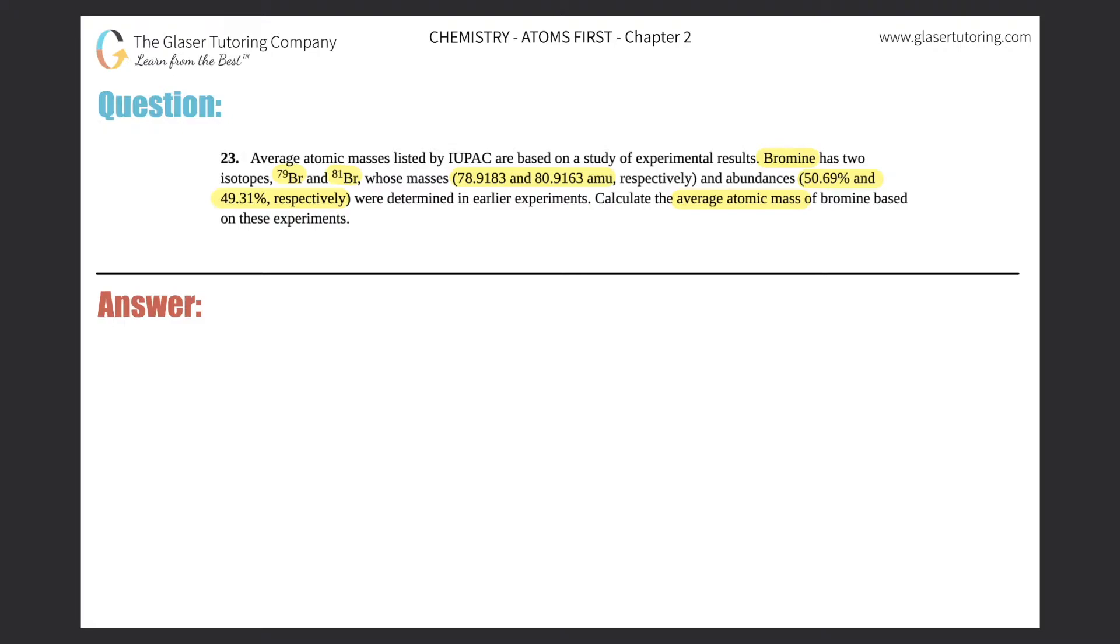Okay, so we see that we have two isotopes, so I'm going to write these down. So we have Br-79 and we have Br-81.